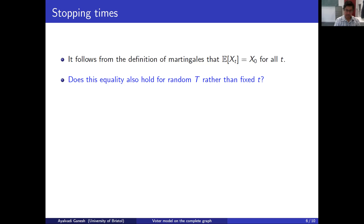This doesn't hold for all possible random times. In particular, it doesn't hold if the random time is defined in a way that depends on the future. If I say I want to stop one time step before I hit zero — somehow I will know when I'm going to hit zero — then this equality doesn't hold.